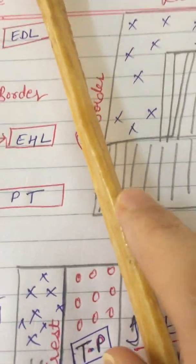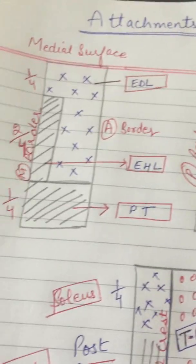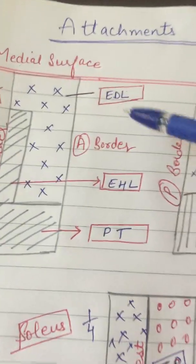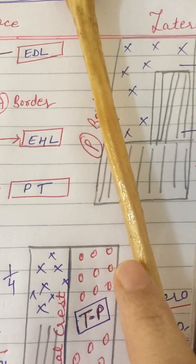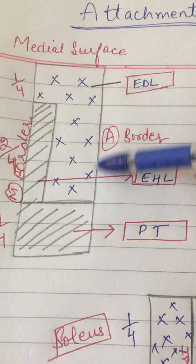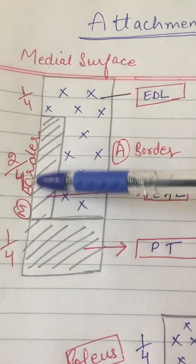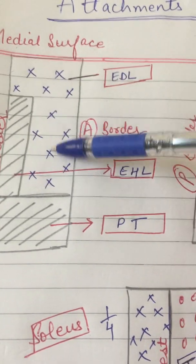Let us come to the medial surface. The medial surface is the smaller one, as I have already shown. The medial surface is between the anterior border and the interosseous border — so in between the anterior border and the interosseous border is the medial surface.